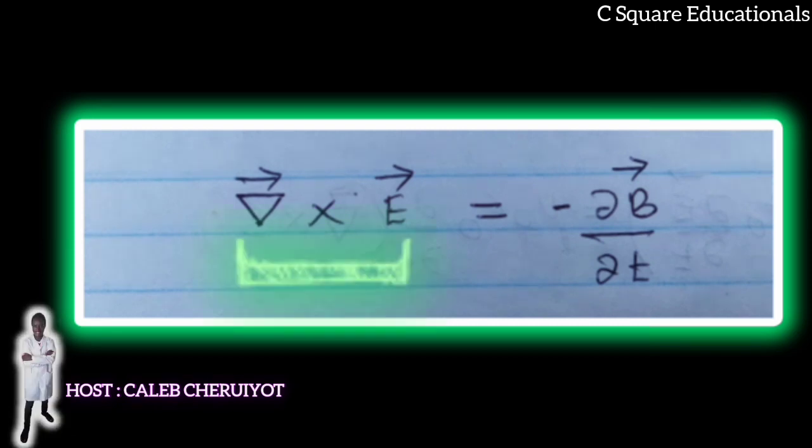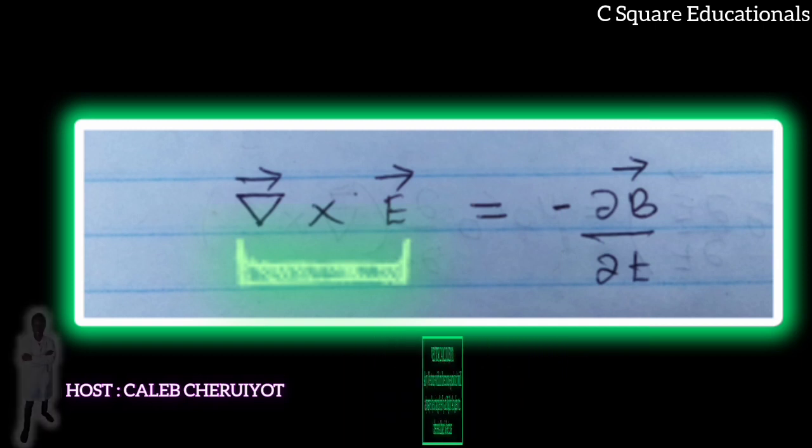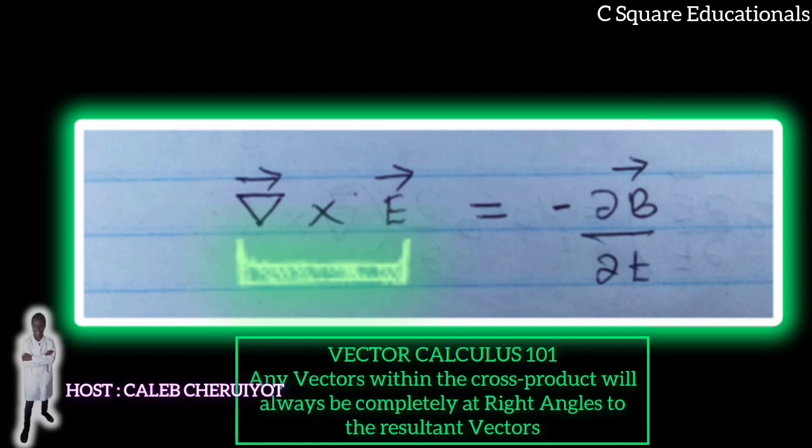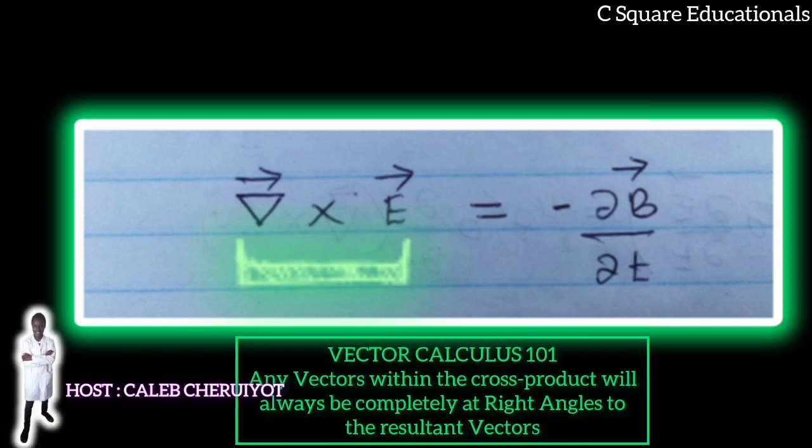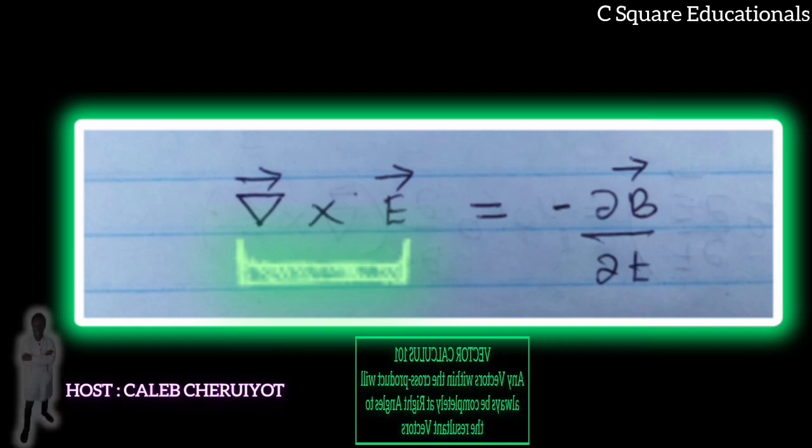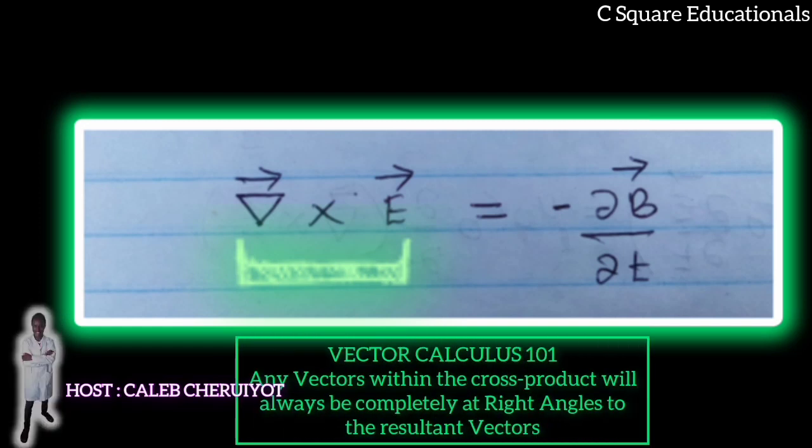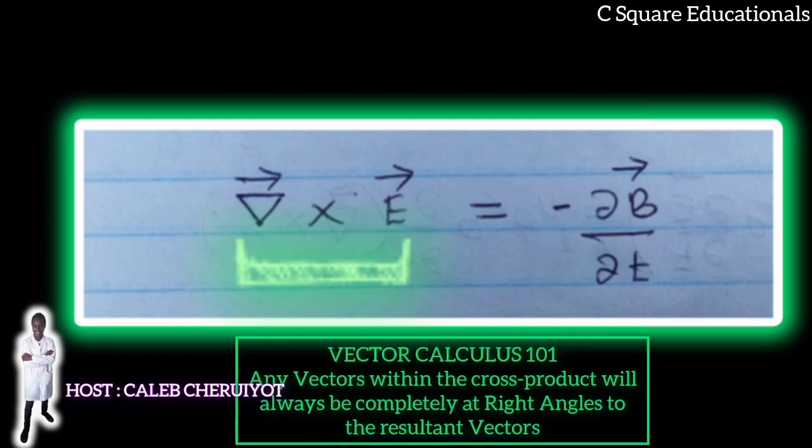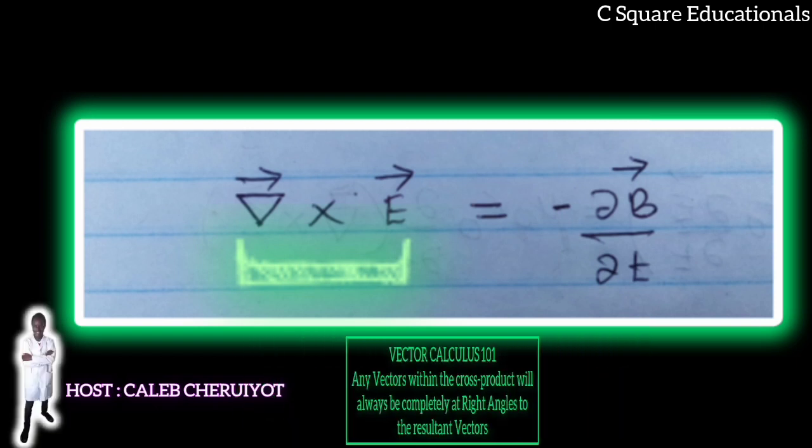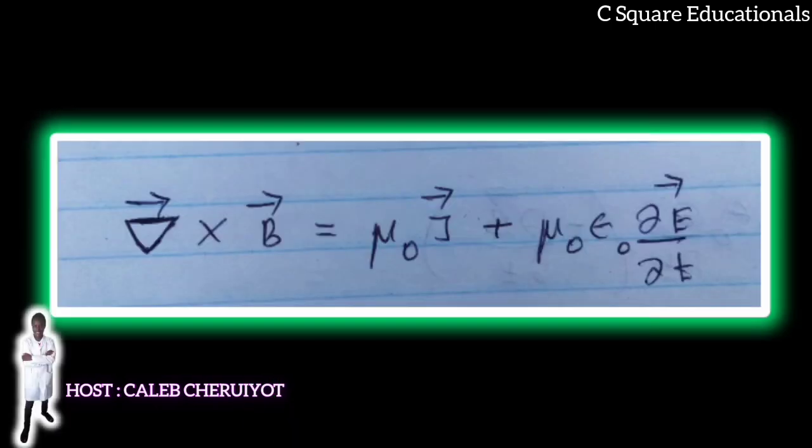Remember mathematically, the left-hand side of this equation, del cross E, we are taking the curl of E. We are taking the cross product. Any vectors within the cross product will always be completely at right angles to the resultant vector which, in our case, is the magnetic field. So if the electric field points anywhere in the XY plane, the magnetic fields must be at right angles to it. The same thing goes for the fourth equation. Any change in the electric field causes new magnetic fields at right angles to the electric field.